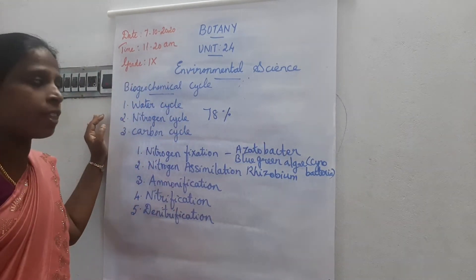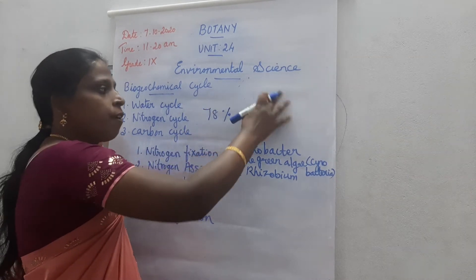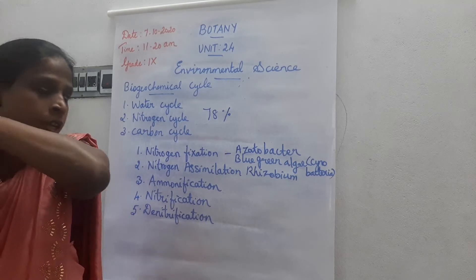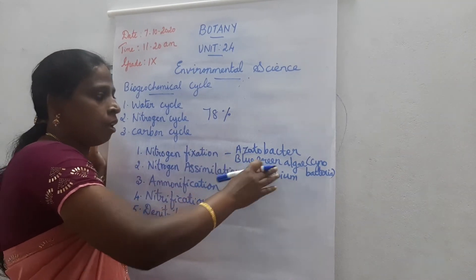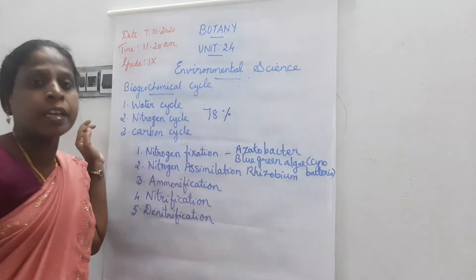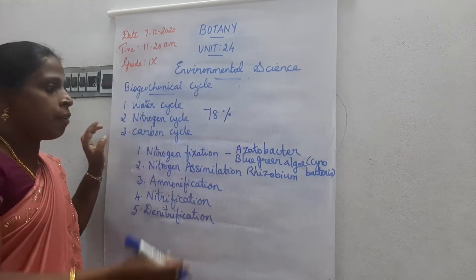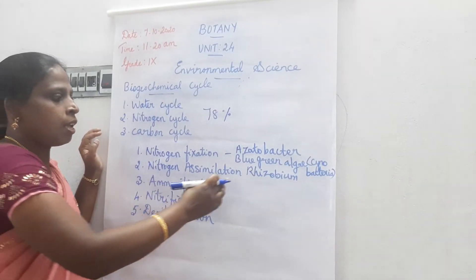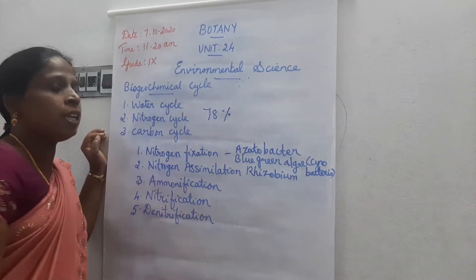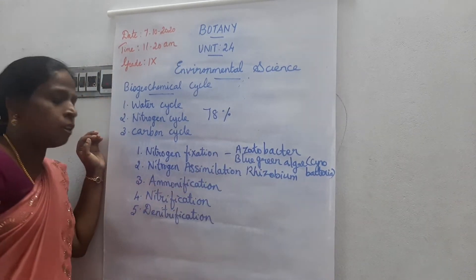These microorganisms can fix atmospheric nitrogen into the soil. The leguminous plants such as peas and beans contain the nitrogen-fixing bacteria rhizobium, which is colonized in the root and forms root nodules. These bacteria fix atmospheric nitrogen into the soil.